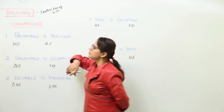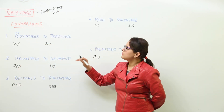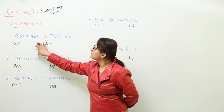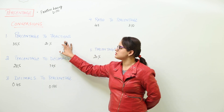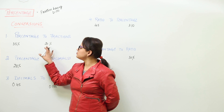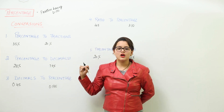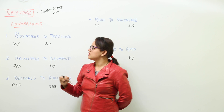Now we have to learn some conversions. First of all, how to convert the percentage to fractions. We have taken two examples: 35% and 20%. We have to convert them to fractions.